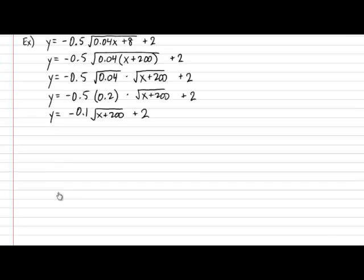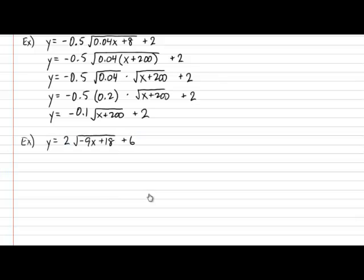Next, I would like to do another example that will produce a very interesting problem. I want you to do this one: Y equals 2 multiplied by the square root of negative 9X plus 18, plus 6. Notice that this is not in proper format because the coefficient on the X is not a positive 1. So let's apply the procedure like normal. Y equals 2 — I'm going to apply the common factor technique — so inside the square root symbol it will become negative 9 multiplied by X minus 2, and the K value is never touched.